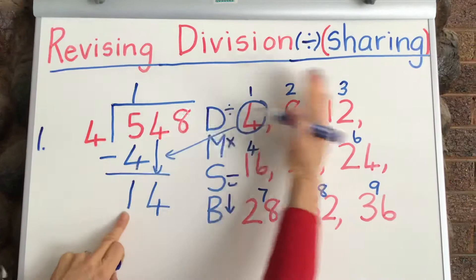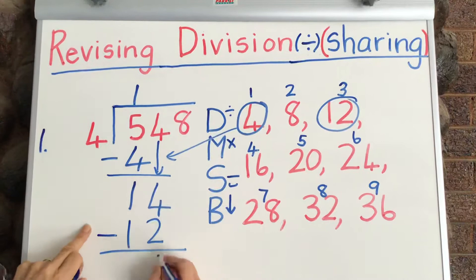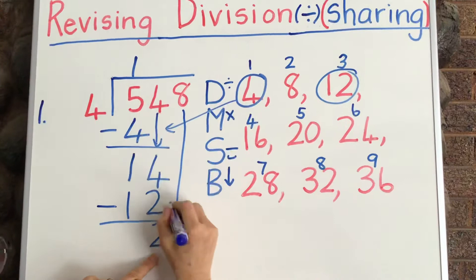Now we're looking for 14 in our multiples. Do we see it? No, we don't. 12, we'll have to go with 12, because 16 is too big. Minus 12. And now we've got 2. 14 minus 12 is 2 there. Bring down 8.